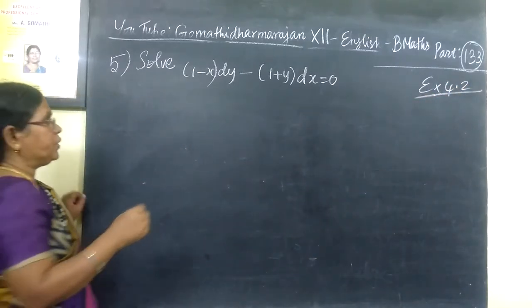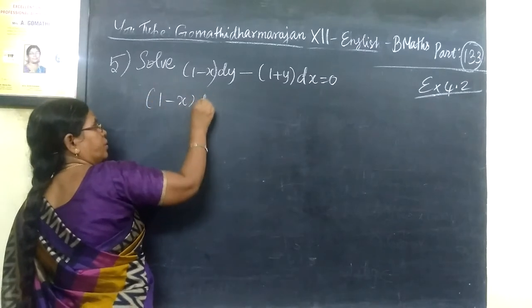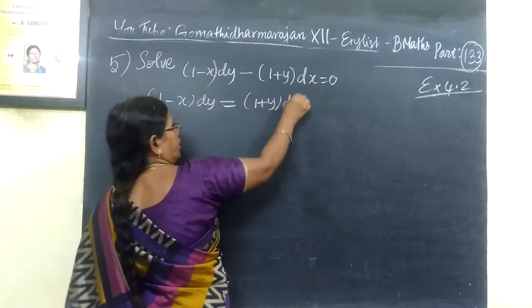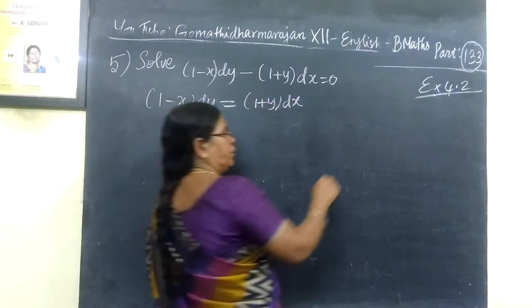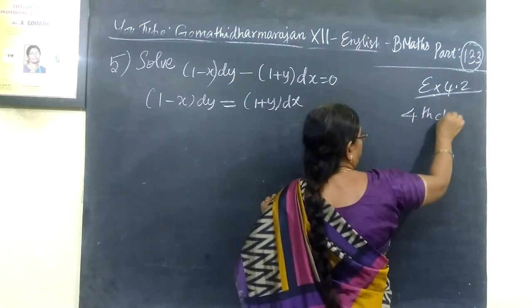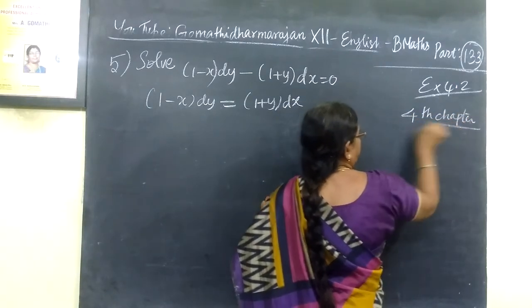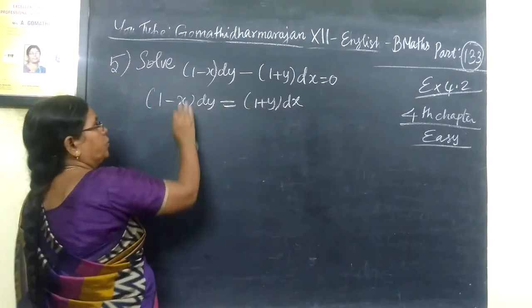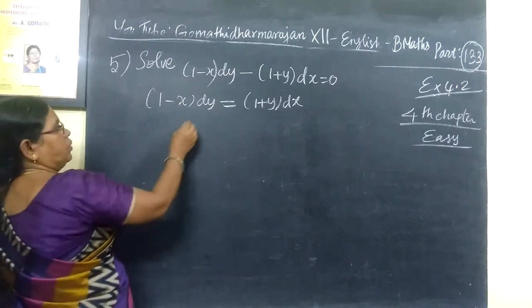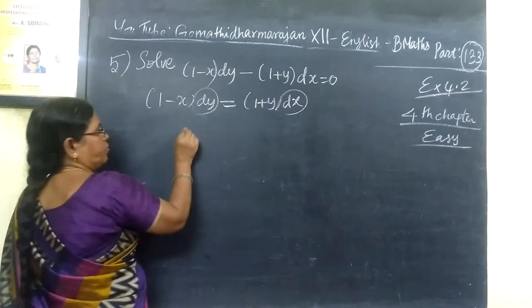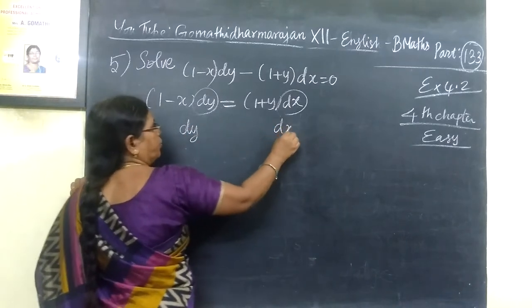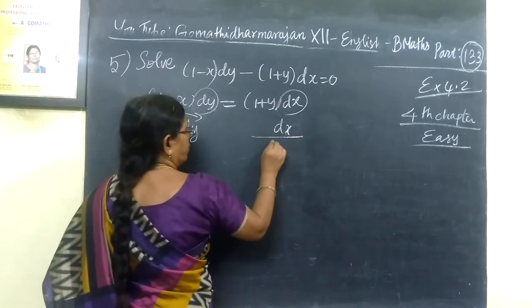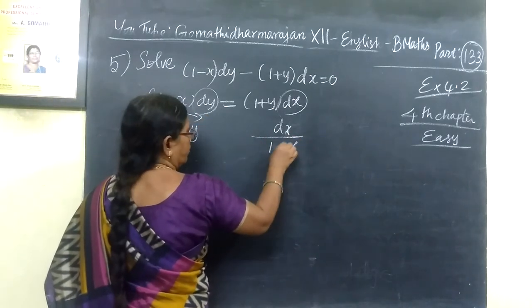So I am going to write (1-x)dy = (1+y)dx. First, this is the equation. It is the integral form. Let me say dx by 1-x. Then both sides we can remove. Now you can use this. Separate numerator and denominator.